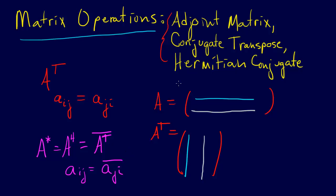That's the adjoint matrix. If you ever see me write a star or an H instead of a T, for a real matrix any term A_ij is equal to A_ij bar, because if it's real there is no imaginary part, and all you do when you take the conjugate is change the sign on the imaginary part. So that is the adjoint or conjugate transpose operation.